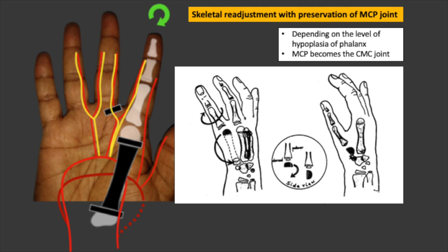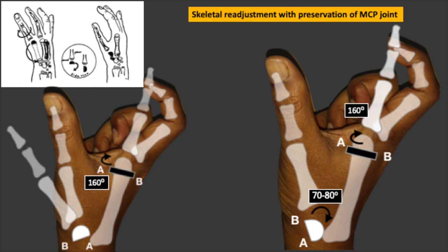After rotation of the transposed index finger, the volar point A becomes dorsal and the dorsal point B becomes volar. However, since extension at the metacarpophalangeal joint of the index finger is not desirable at the newly formed carpometacarpal joint of the thumb, Buck-Gramcko suggested rotation of the metacarpal head by 70 to 80 degrees so that volar point B becomes the distal point and dorsal point A becomes the proximal point of the skeletal attachment.